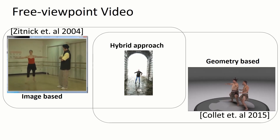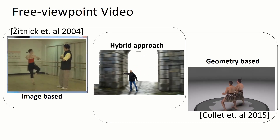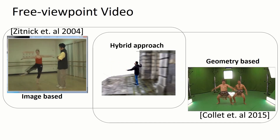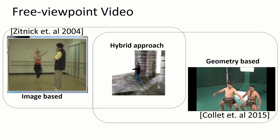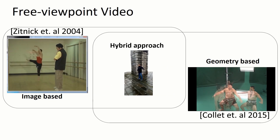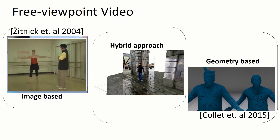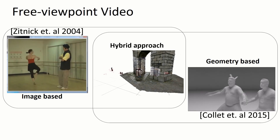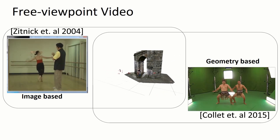In geometry-based techniques, the 3D geometry of both the dynamic foreground and static background is acquired, allowing the rendering from any other viewpoint. In between these two extremes, we can find very interesting techniques that make use of 3D geometry estimation to improve the synthesis of new views.